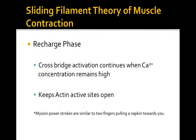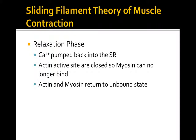In the recharge phase, cross bridge activation continues as long as calcium concentration remains high, keeping the actin active sites open. The cross bridges re-cock and fire repeatedly because calcium stays in circulation—this does not stop until calcium is removed. During the relaxation phase, calcium is pumped back into the sarcoplasmic reticulum. The active sites on the actin are covered again, myosin can no longer bind, and the muscle returns to its resting state.